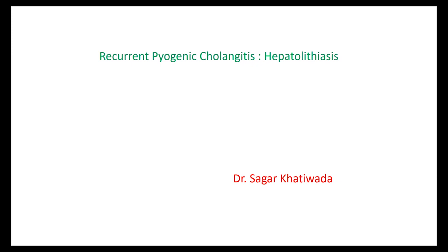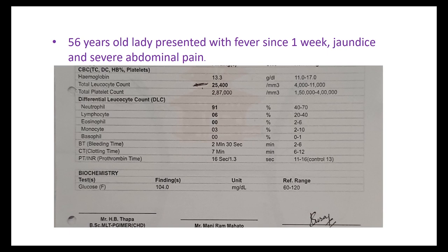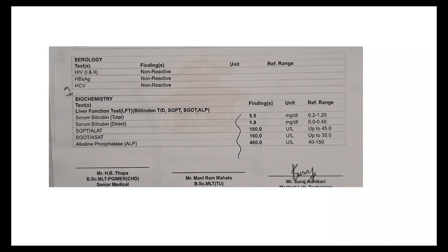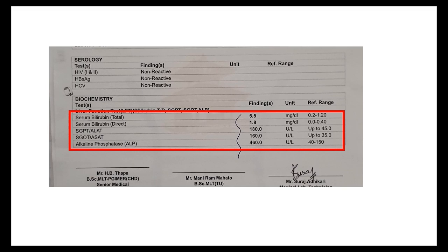A 56-year-old lady presented with fever since one week, jaundice, and severe abdominal pain. Her initial routine investigations showed total leukocytic count of 25,400. Liver function tests showed total bilirubin of 5.5 with features of obstructive jaundice. PT-INR was slightly raised.